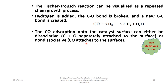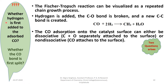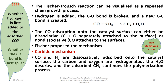Two mechanistic questions arise: whether hydrogen is first added to the adsorbed CO, or whether the C–O bond is first split; and whether CO adsorption is dissociative or non-dissociative. Fischer proposed a carbide-type mechanism, in which carbon monoxide and hydrogen are dissociatively adsorbed onto the catalyst surface, then carbon and oxygen are hydrogenated, water desorbs, and the adsorbed CH₂ continues the polymerization process.